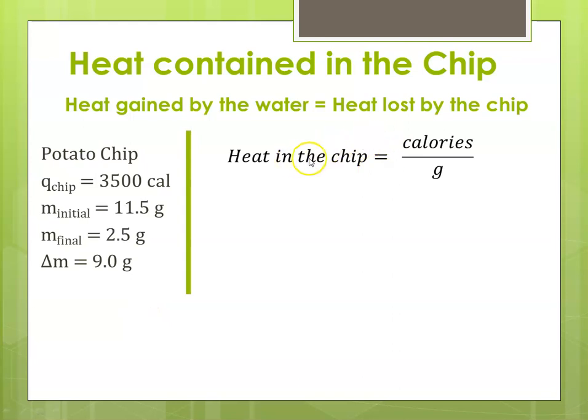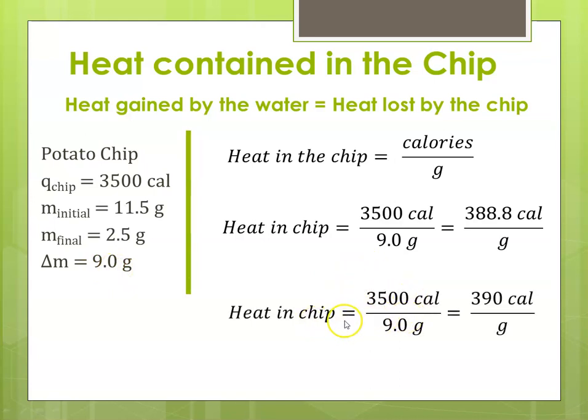So, now we're going to calculate. The heat in the chip is usually calculated by calories per gram. So, we've got the calories, and we have the mass that we burned. So, the heat in the chip in this case was 3,500 calories. We calculated that using water, divided by 9 grams. That was the mass that actually burned. And that comes out to 388.8 calories per gram. And then if we look over here, this number, the Q, had two significant digits. The change in mass also had two significant digits. So, we're going to round to two sig figs. So, that means that the heat in the chip came out to 390 calories per gram. 3,500 divided by 9, rounded to two sig figs, comes out to 390 calories per gram.